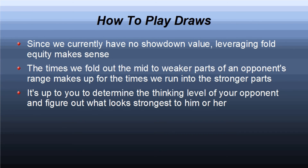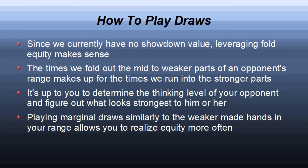Whatever line will exert maximum pressure against the weaker made hands in your opponent's range is the key — represent whatever your opponent will believe to be legitimately strong, based on your opponent's perceived level of thinking. The exception is when you hold a low equity draw; in that case, it is often better to take whatever line will allow you to realize your equity with a higher frequency. The balance between collecting fold equity and equity realization is a constant struggle for good players and something you will need to actively work on.